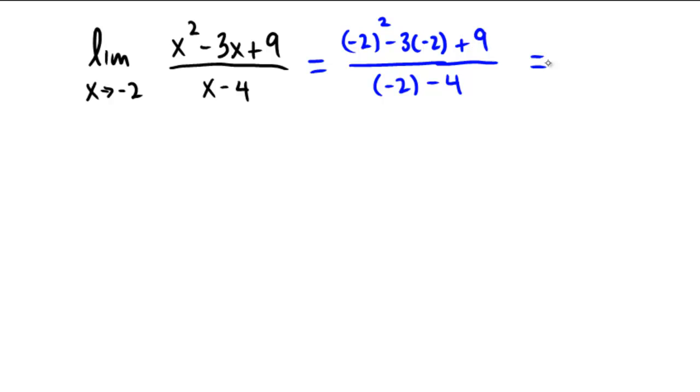In the denominator, let's do that one first. It's a little bit simpler. Negative 2 minus 4 is negative 6, so I'm seeing a negative 6 in the bottom.